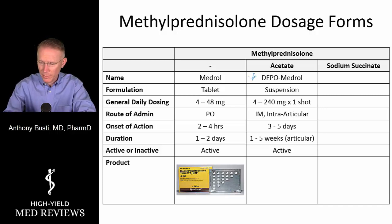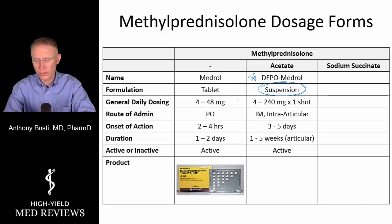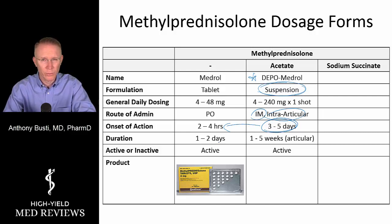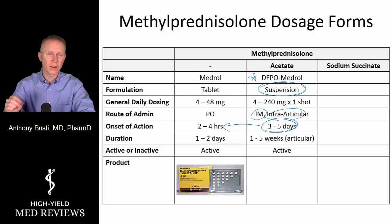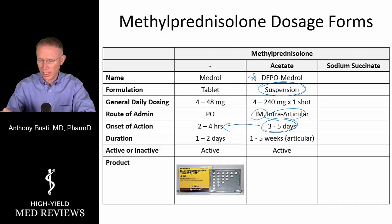Methylprednisolone acetate is called Depo-Medrol. The 'depo' refers to the fact that it is a suspension, making it unique — it can only be given by IM, intralesional, or intra-articular injection. The IM and intra-articular onset is about 3 to 5 days, which is much different from the onset of plain methylprednisolone at just a couple of hours. The clinical relevance of that delayed onset is that you may need to give something in the interim — like dexamethasone, prednisone, or methylprednisolone tablets — until this drug kicks in.